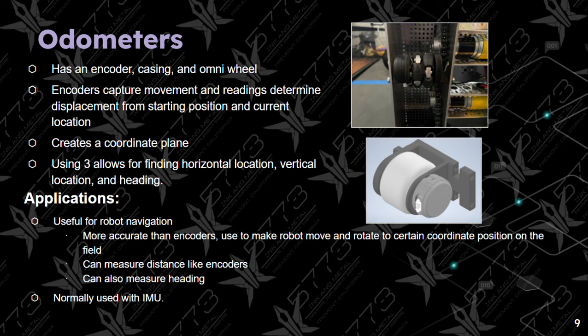The next sensor is the odometer, which is slightly more accurate than encoders. It has an encoder, a casing, and an omniwheel. Encoders capture movement and readings determine displacement from the starting position and current location. It also creates a coordinate plane, and using these three allows for finding horizontal location, vertical location, and heading — also known as angle. Its applications include robot navigation; it is more accurate than encoders and can make a robot move and rotate to certain coordinate positions on the field. It can measure distance like an encoder and also measures heading. It is normally used together with an IMU, which we'll discuss next.